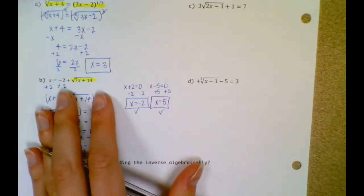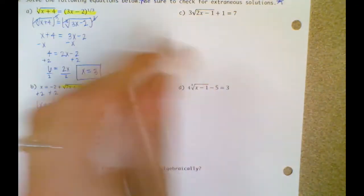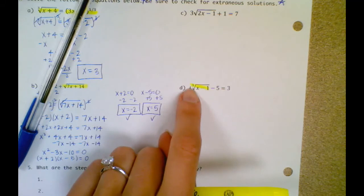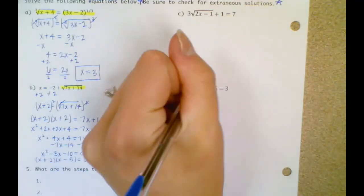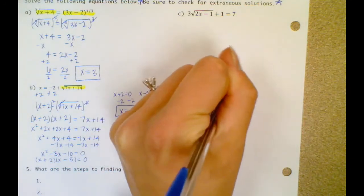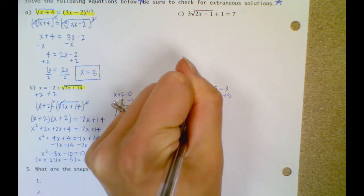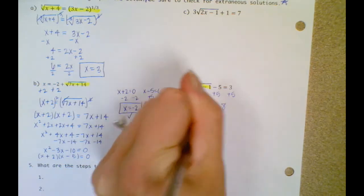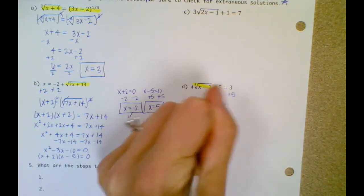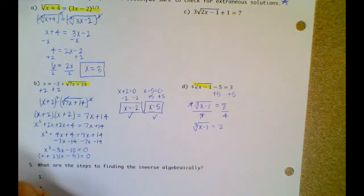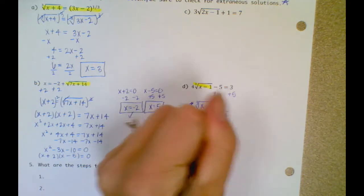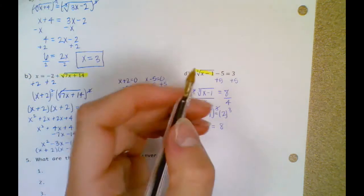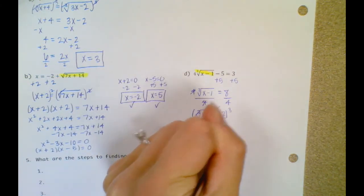Letter D. Here's my radical. Notice that this 4 is being multiplied by the radical, so I've got to move everything else over first that's not as attached to it. I'm going to add the 5 first. I get 4 times the cube root of x minus 1 equals 8. I still don't have the radical by itself, so I'm going to divide both sides by 4. That gives me the cube root of x minus 1 equals 2. Now I'm going to cube both sides to get the x out of it. 2 to the third is 8.